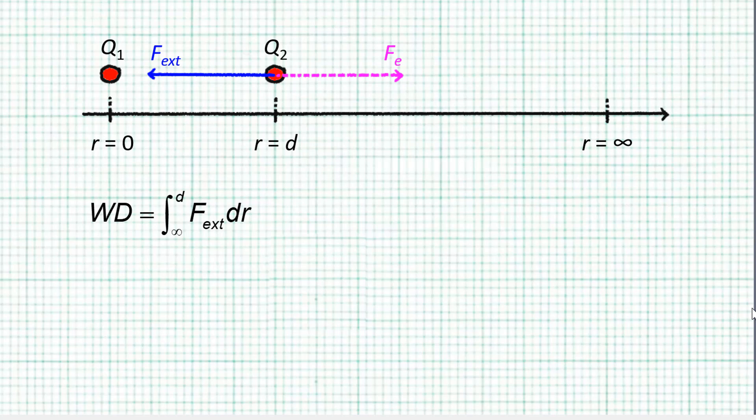Since the external force is equal but opposite to the electric repulsion force, F external equals negative Fe. We then write Fe as kQ1Q2 over r squared. That's Coulomb's Law.